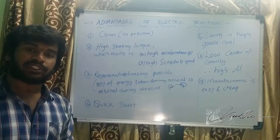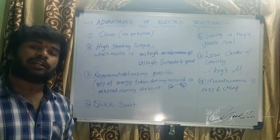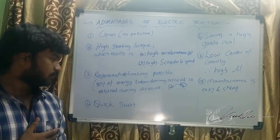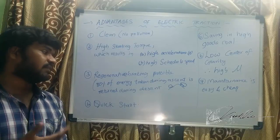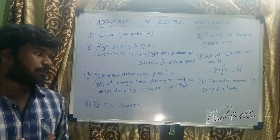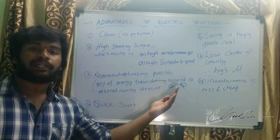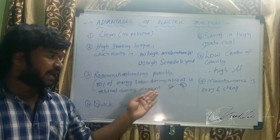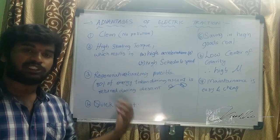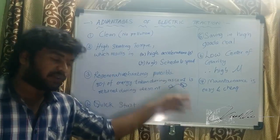Regenerative braking is possible — an electric form of braking that is very efficient. By regenerative braking, electricity is regenerated and supplied back to the system or used to charge the battery. Eighty percent of the energy consumed during ascent is returned during descent; when a train climbs uphill, 80 percent of the energy consumed going up is regenerated and sent back to the supply when going down.